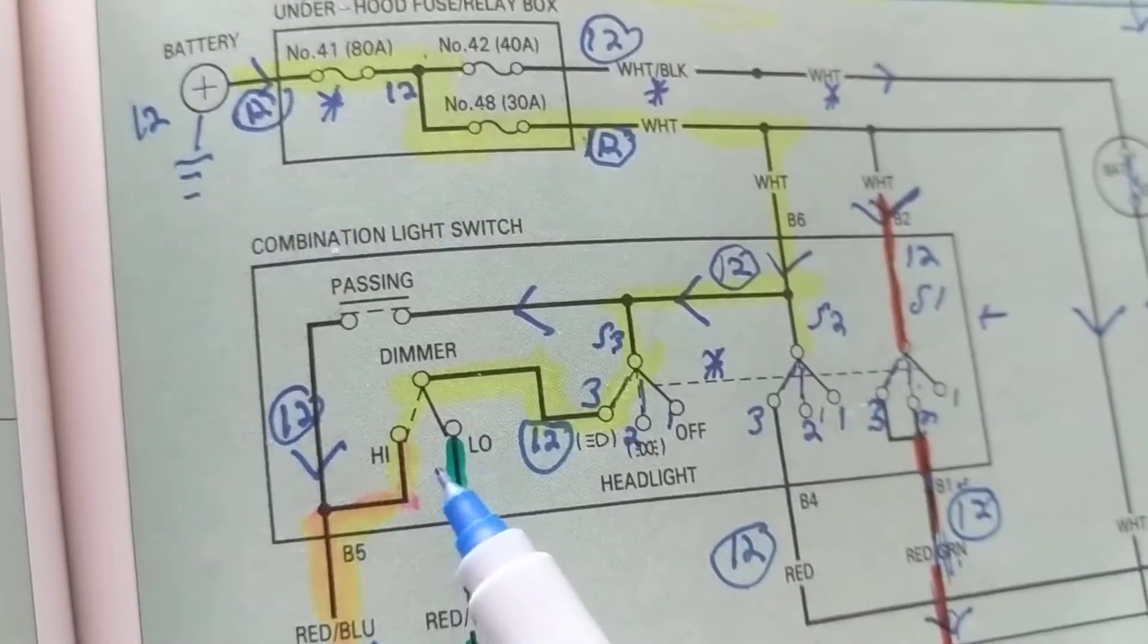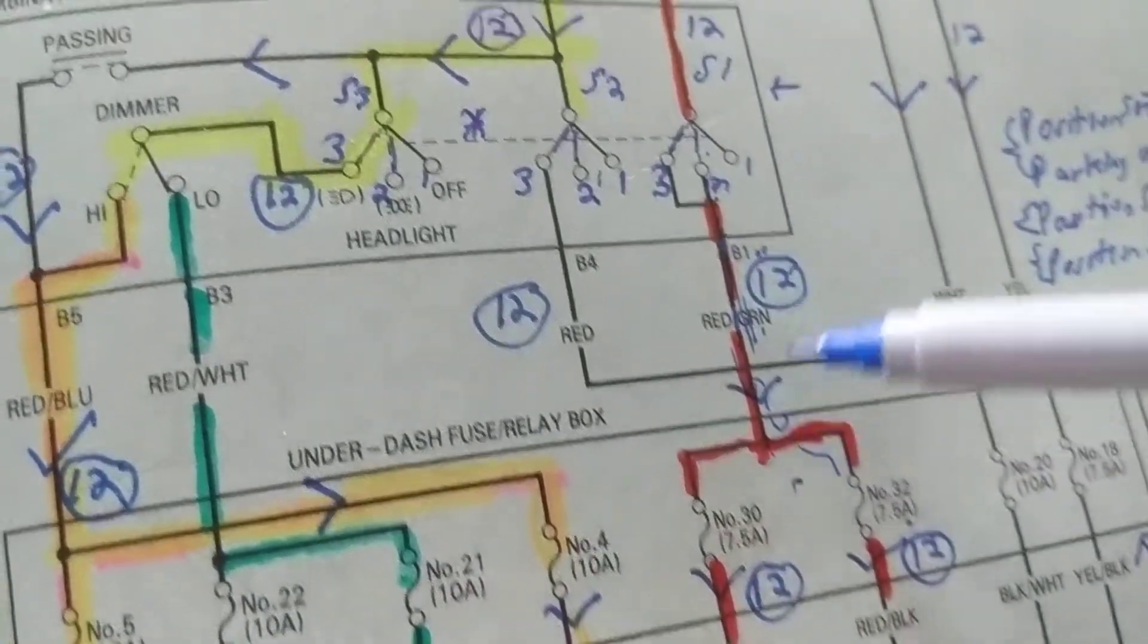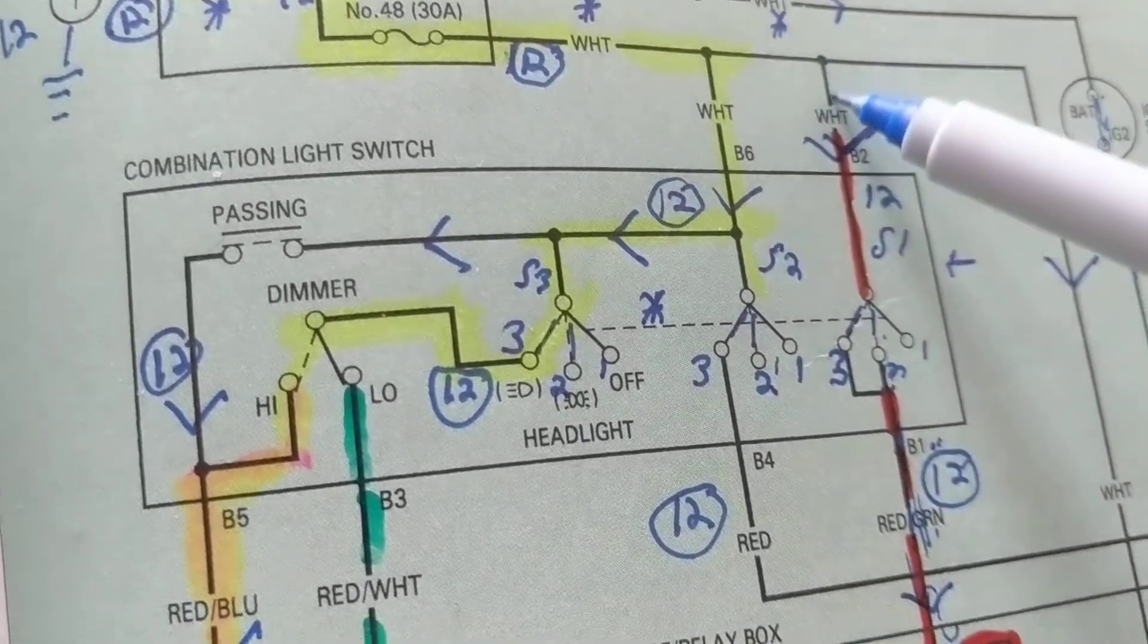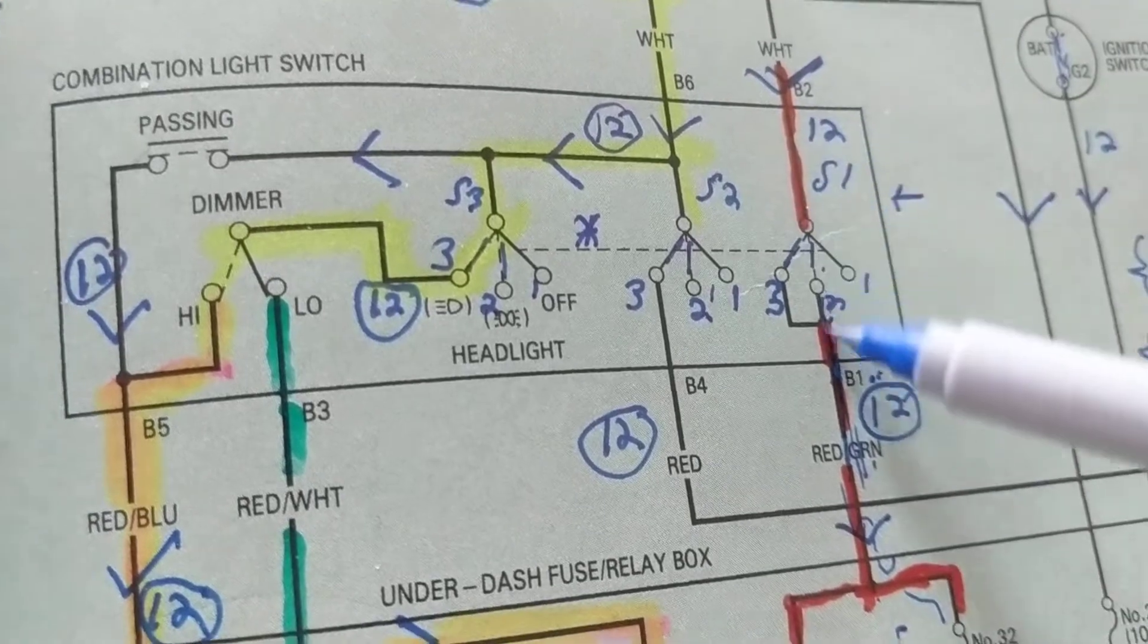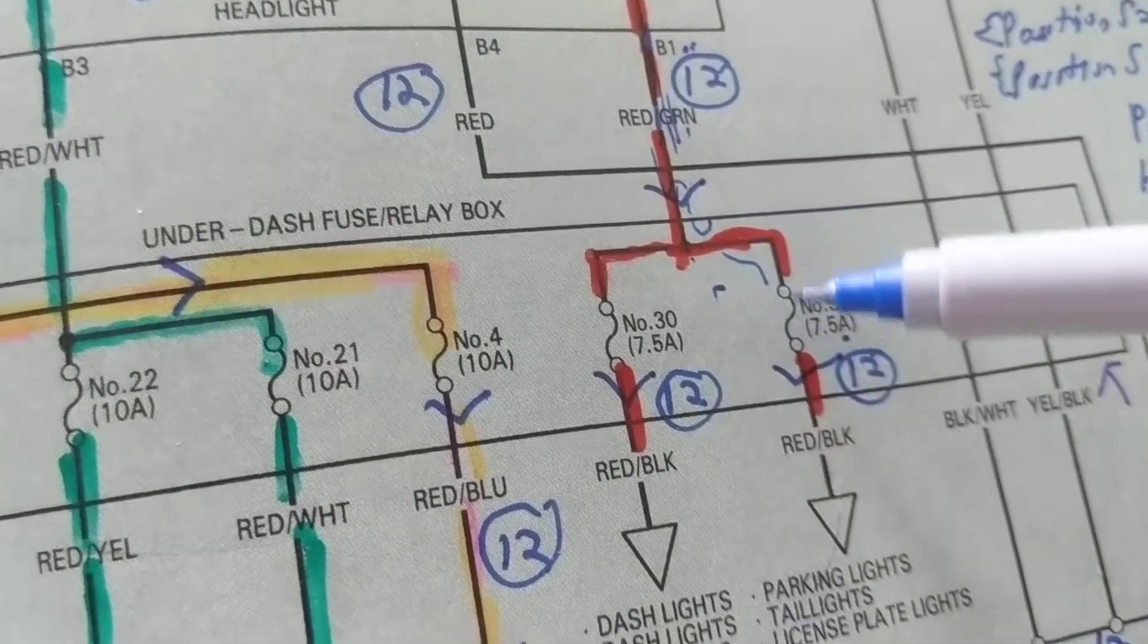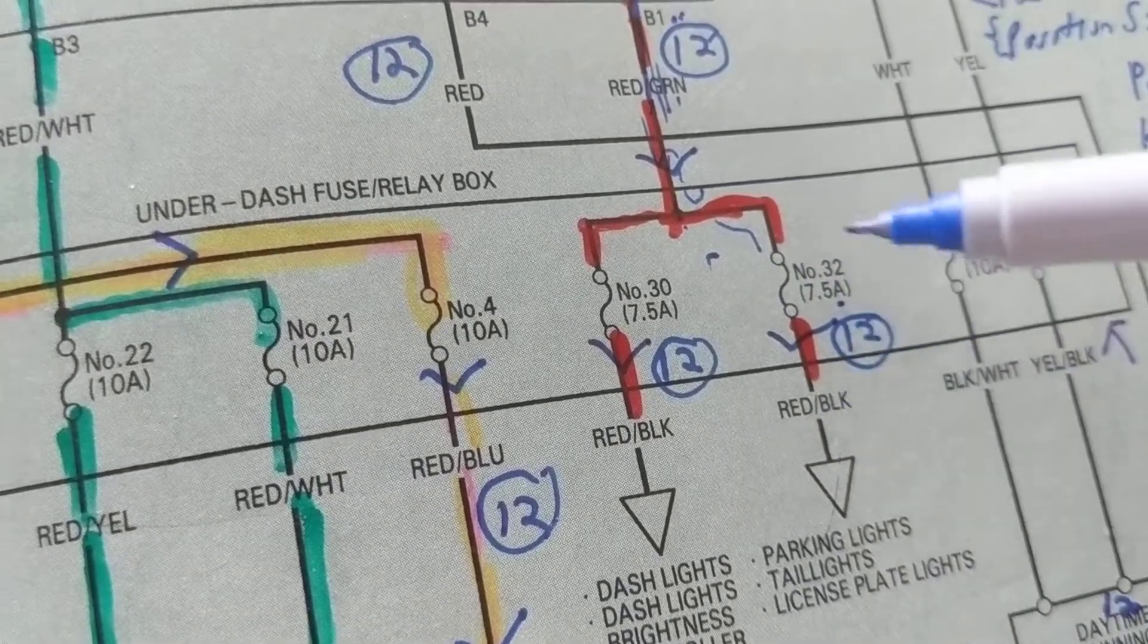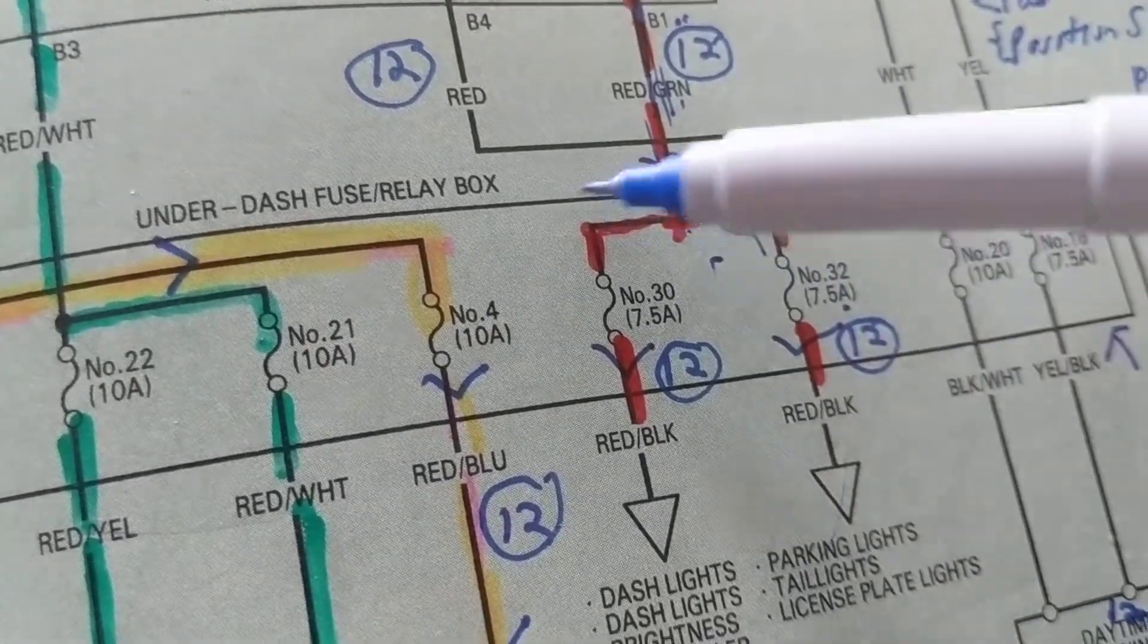That's how you figure out what a switch does. Now position 3. So we did this branch. We took care of this branch and we said current will flow from the white one to this white one, through this switch, come out the other side of the switch to a red and green wire to fuse number 32, number 30, the current will divide.